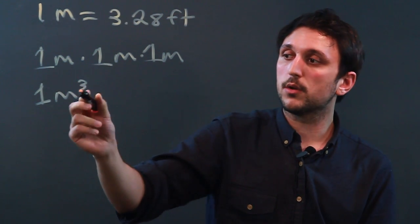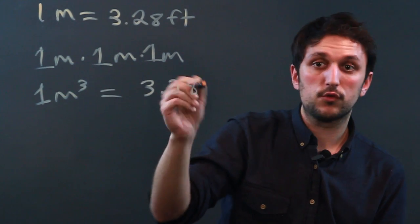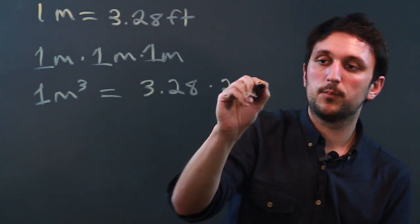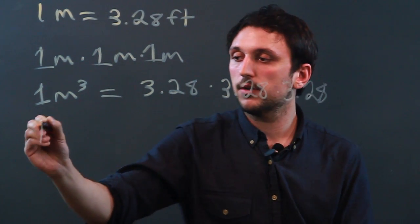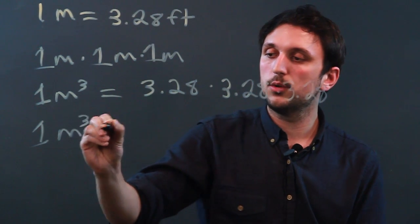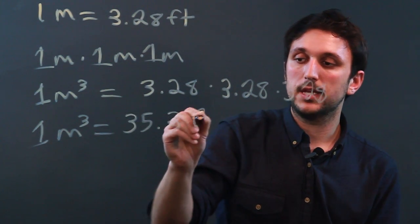So one meter cubed is the same as 3.28-ish times 3.28 times 3.28, and that's going to give us one meter cubed equals roughly 35.3 feet cubed.